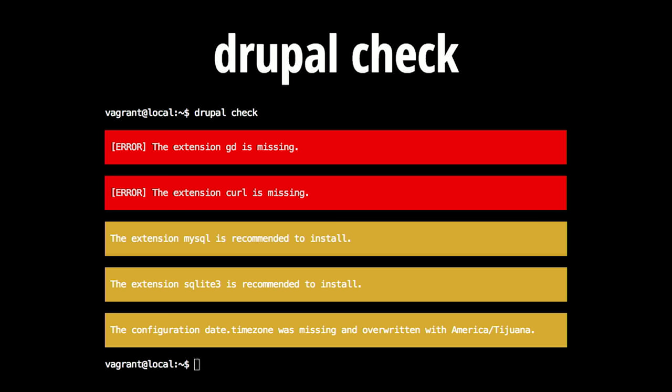First, let's start with the system. If you install Drupal Console on your machine, the first thing you need to run is 'drupal check'. Usually we always blame the product and never blame our environment. The most common error is that we are not prepared to run the software — you don't have the minimum PHP version, you don't have some PHP extension, or you can't connect to the database even if you're using MySQL or SQLite. This command analyzes what is available in your system and whether you are compatible to install Drupal 8.